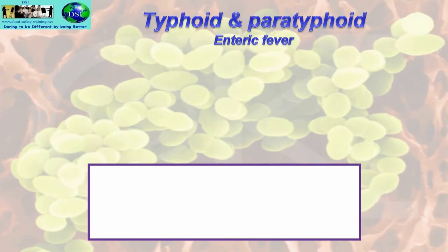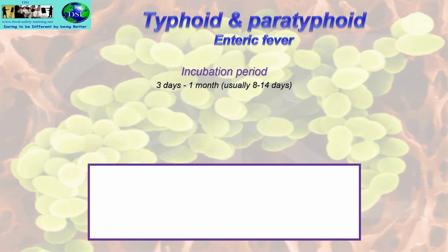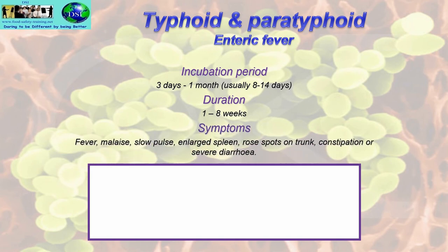Typhoid and paratyphoid — together known as enteric fever. Incubation period is 3 days to 1 month, typically 8 to 14 days. Duration is 1 to 8 weeks. Symptoms include fever, malaise, slow pulse, enlarged spleen, rose spots on the trunk, and either constipation or severe diarrhoea.